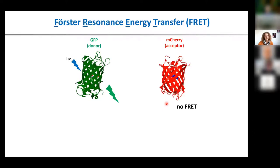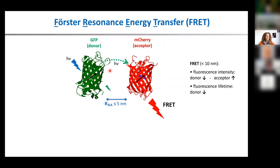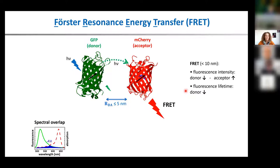Steffi very nicely explained FRET already, so I don't have to go into too much detail. The experiments I'll show later all use proteins of interest labeled with either GFP as a donor and mCherry as an acceptor. If the two are too far from each other, we won't see FRET — we only see FRET if they come close enough. For GFP and mCherry, the Förster radius is below 5 nanometers. FRET affects the fluorescence intensity — the donor fluorescence goes down, the acceptor fluorescence goes up — and also the fluorescence lifetime of the donor decreases, which depends on the spectral overlap of the FRET pair, the distance, and the orientation of the dipole moments.